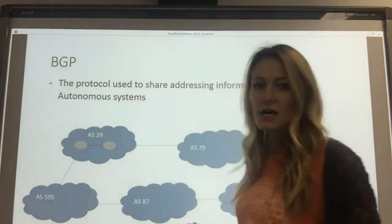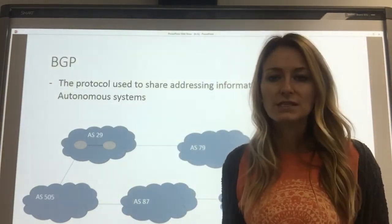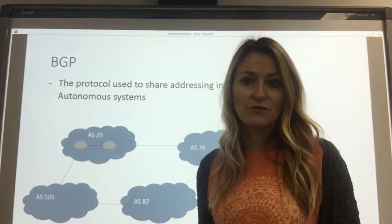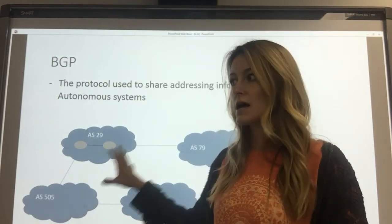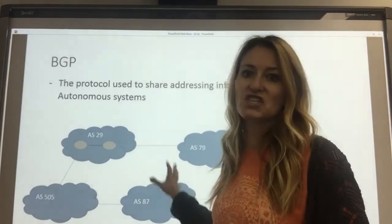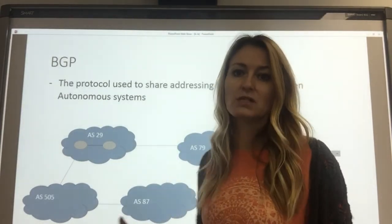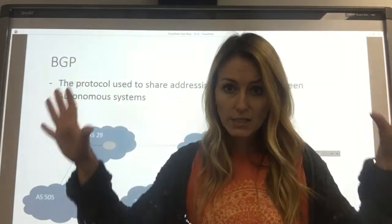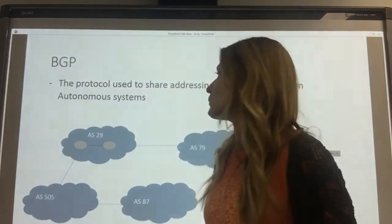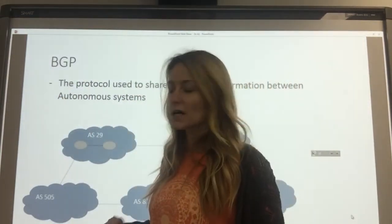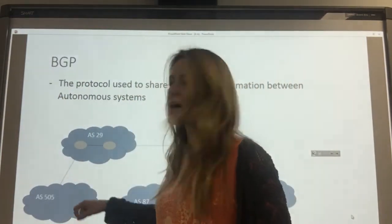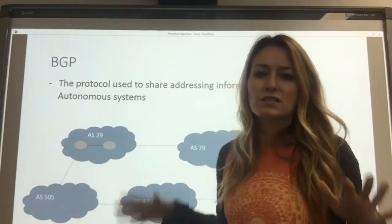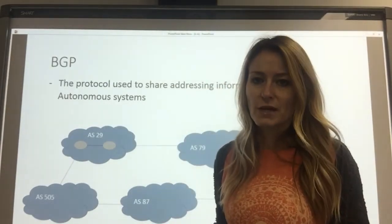So I've got a diagram here. Let's pretend each one of these clouds represents a different ISP, and it's these ISPs all put together that make up the internet. So we've got autonomous system 29 over here, 505 down here, 79 over here — just a bunch of different numbers.